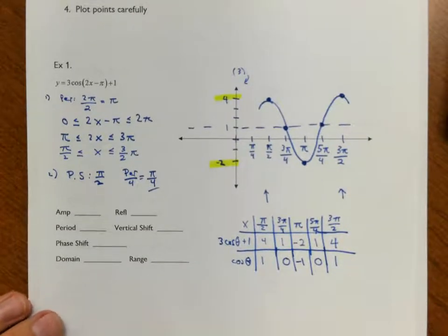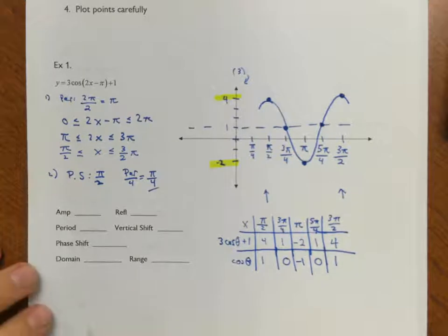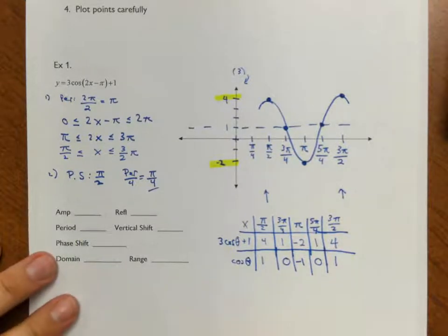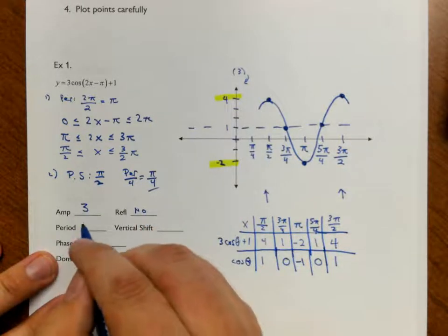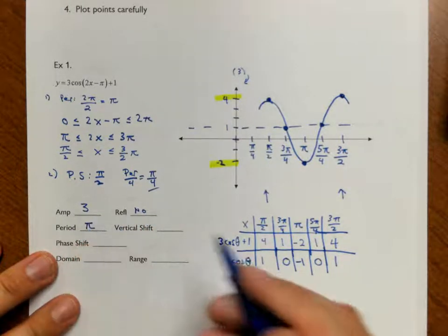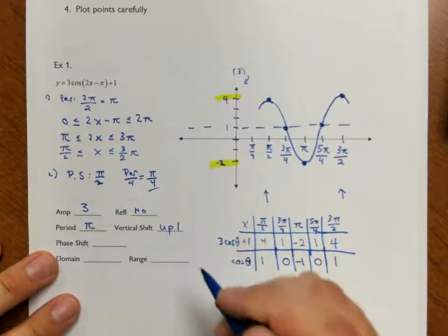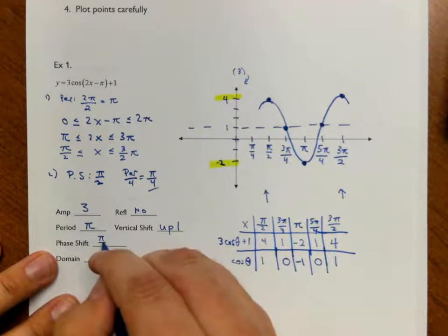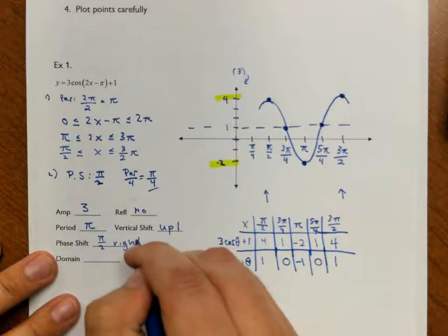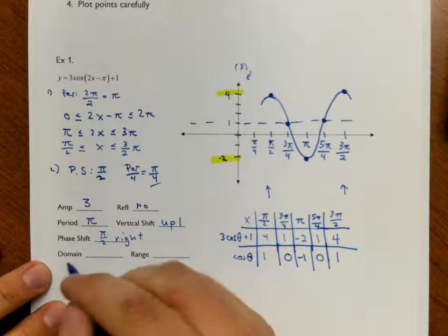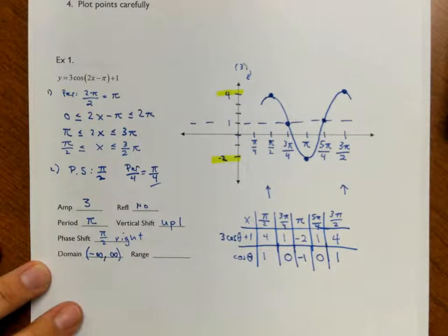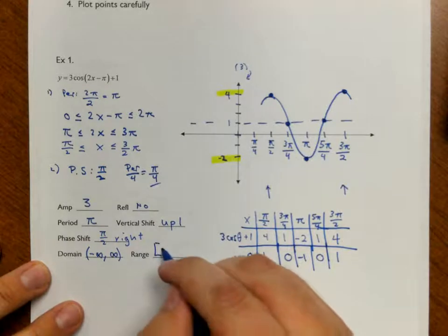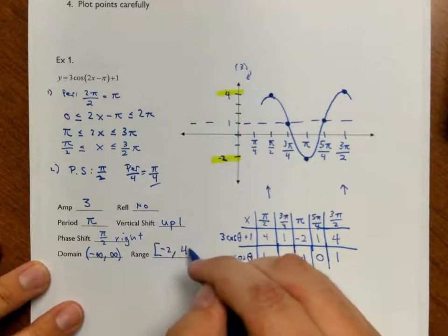As I graphed this, I actually answered all the key questions. My amplitude was 3. There was no reflection in the x-axis. My period was π. The vertical shift was up 1. My phase shift was π/2 to the right. The domain for any general sine or cosine is negative infinity to infinity. And the range goes from negative 2 up to 4.